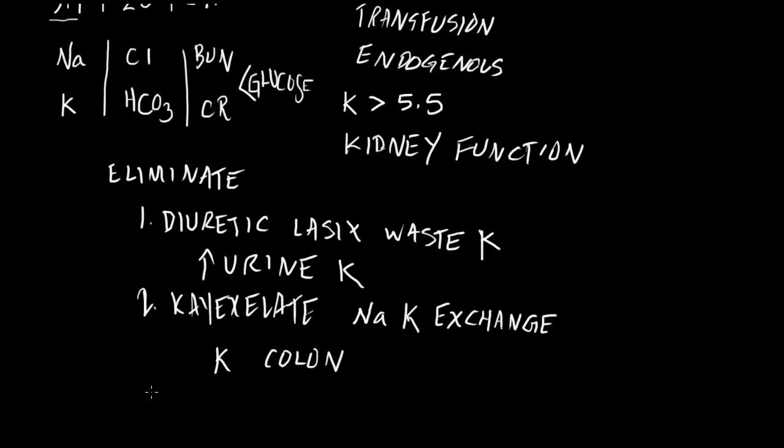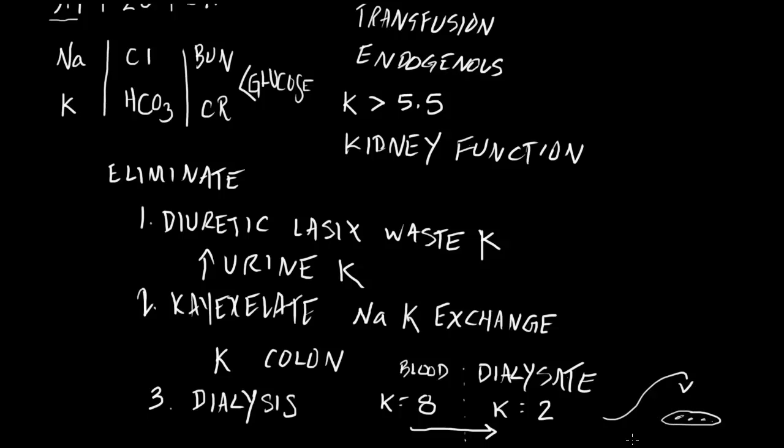The other way to definitively remove potassium is by dialysis. Dialysis is not a benign procedure because it involves central venous access. However, dialysis removes potassium through diffusion. Here's your blood—let's say our K is 8—and here's our dialysate with K of 2. What happens is K leaves the blood, goes into the dialysate, and with the dialysis machine we basically take that potassium and dump it down the drain. Those are definitive ways to remove potassium.